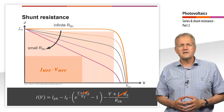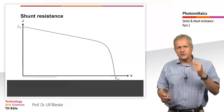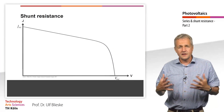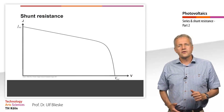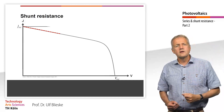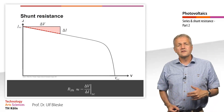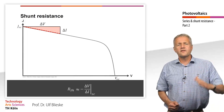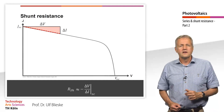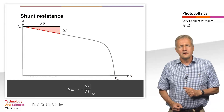Typical values for the shunt resistance of a commercial solar cell are in the range of 1000 Ω·cm². The shunt resistance can be extracted from the IV characteristic as well. We look at the slope of the curve near I_SC. The slope of the curve near the short-circuit current is 1 divided by the shunt resistance. The smaller the shunt resistance, the flatter the curve will be at this point. The larger the shunt resistance, the more ideal the curve.